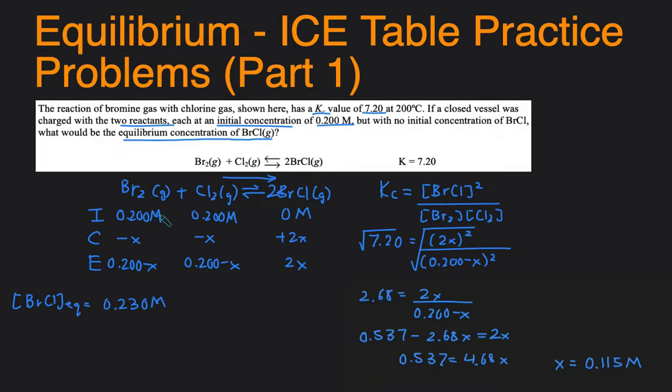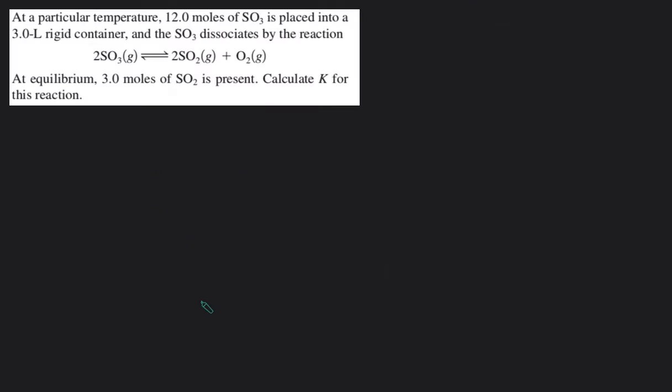In the previous question, we were given the initial values and then given the K values and have to solve for the equilibrium values. This time, we're given the initial values and the equilibrium values and then we have to solve for K. So let's start by again rewriting the reaction.